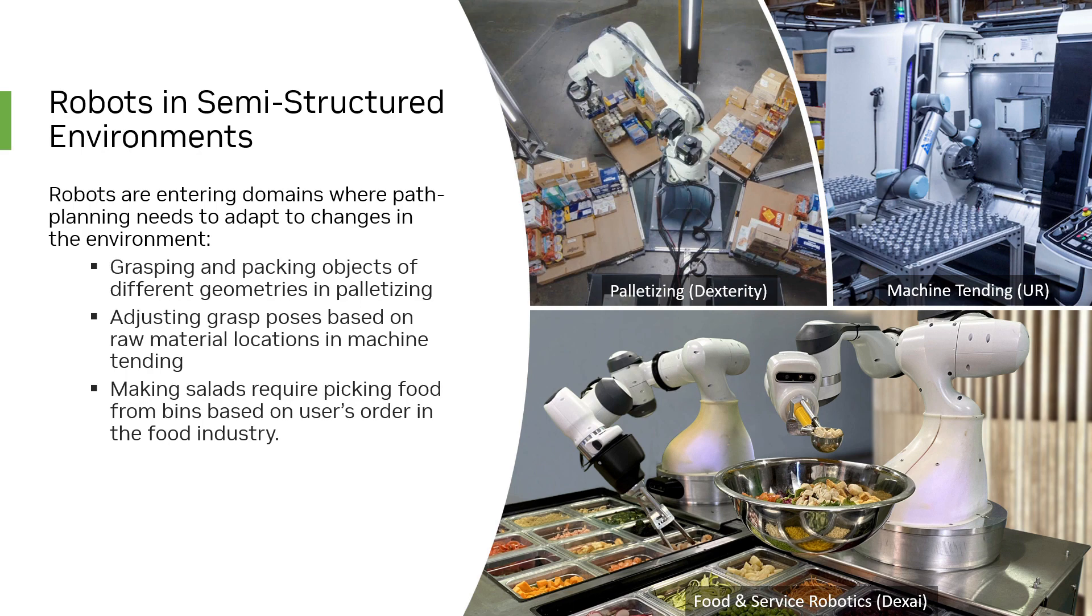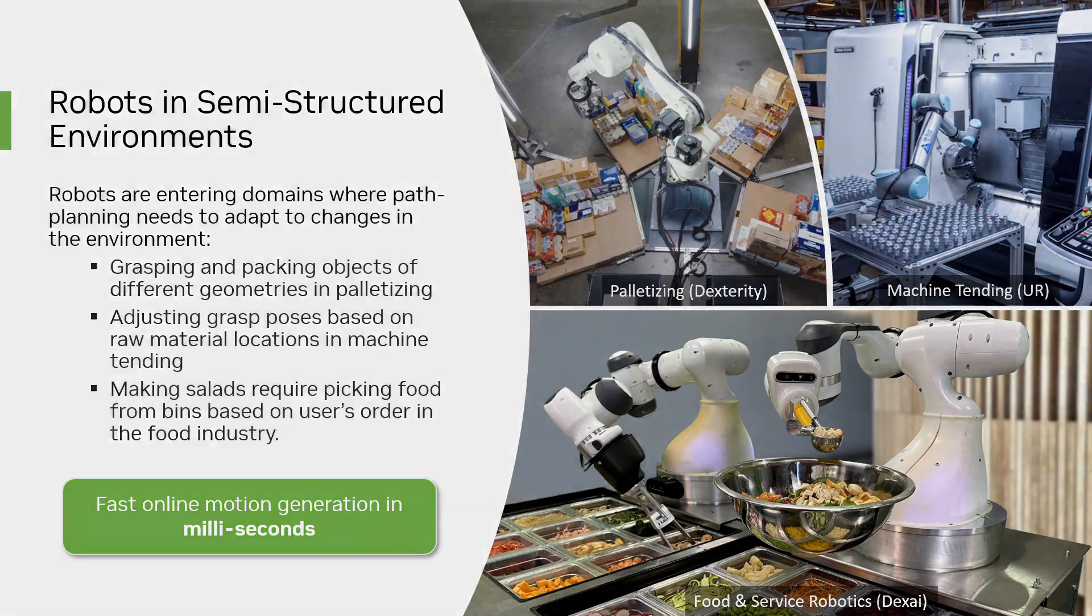In the food industry, where robots are making custom salads, they need to pick specific ingredients based on the order of food on the fly. In all these domains, we need robots to generate new motion plans within milliseconds to avoid large slowdowns in cycle time.